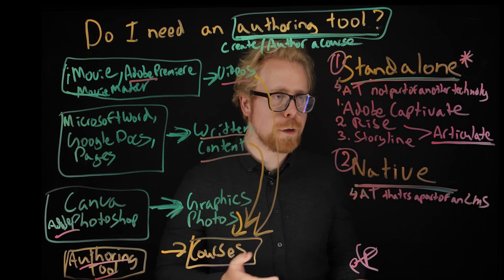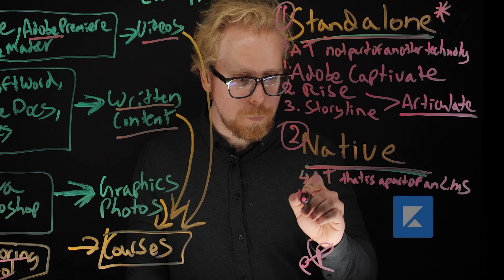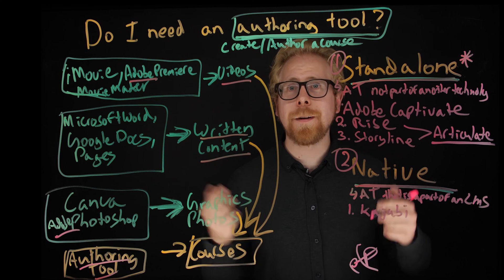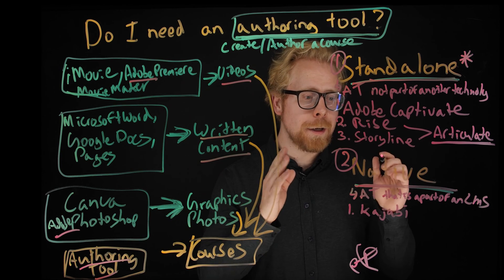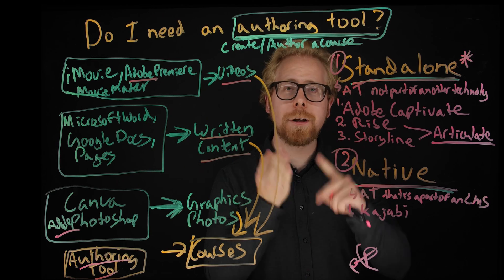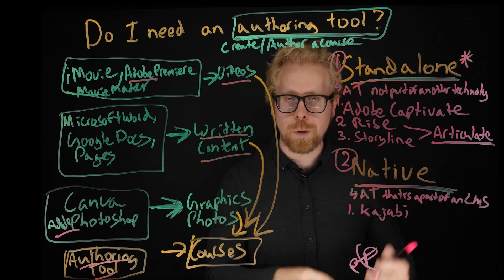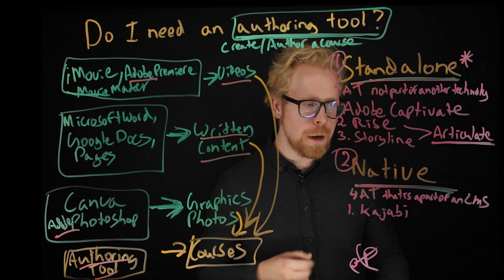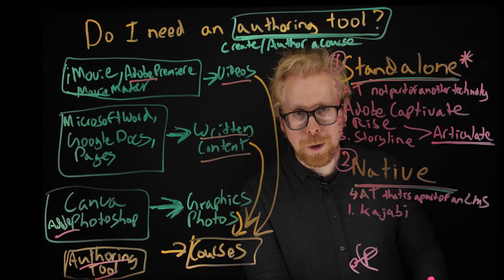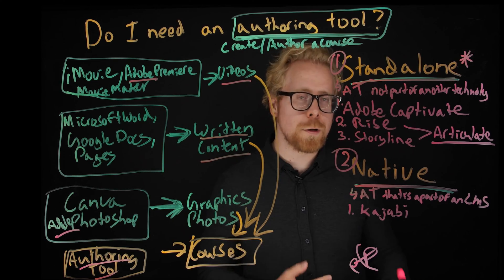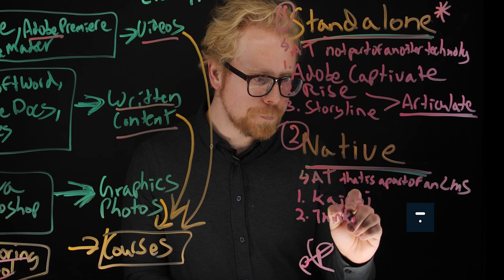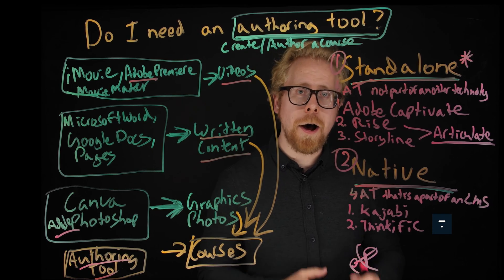What are some examples of native authoring tools? Well, Kajabi — which we talk about a lot on the channel, we have a whole playlist all about it. Kajabi is a phenomenal learning management system, business management system, and authoring tool that you can use if you're creating an externally facing e-learning program — one that you're selling to consumers. Kajabi has a native function that lets you author your course within the Kajabi LMS, and it's actually a BMS, a business management system, doing much more than just an LMS. Thinkific also has native authoring abilities.